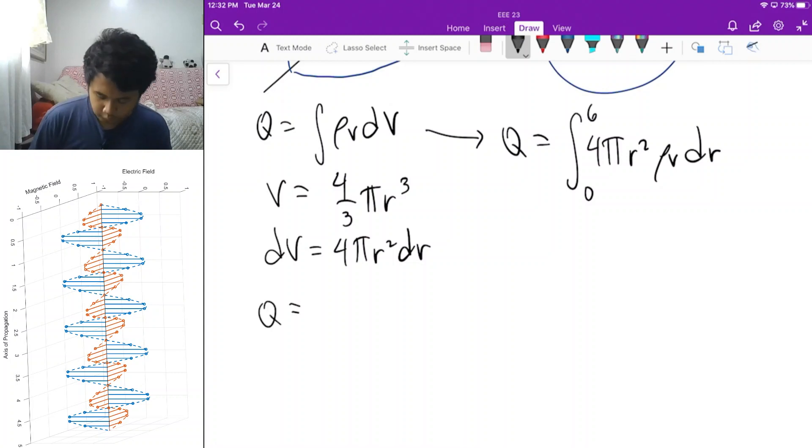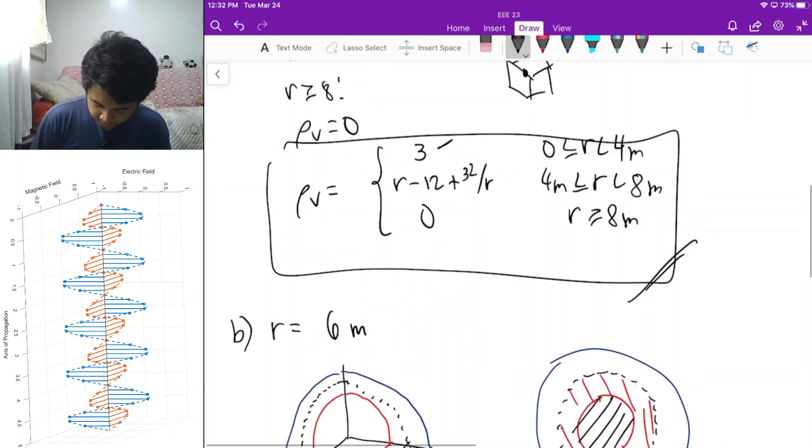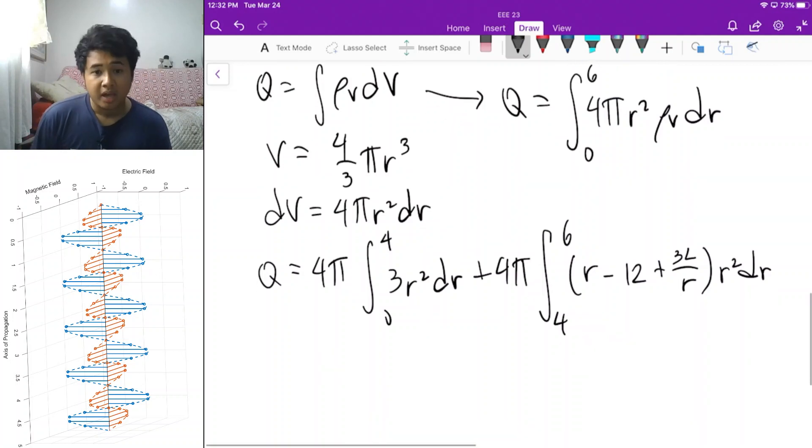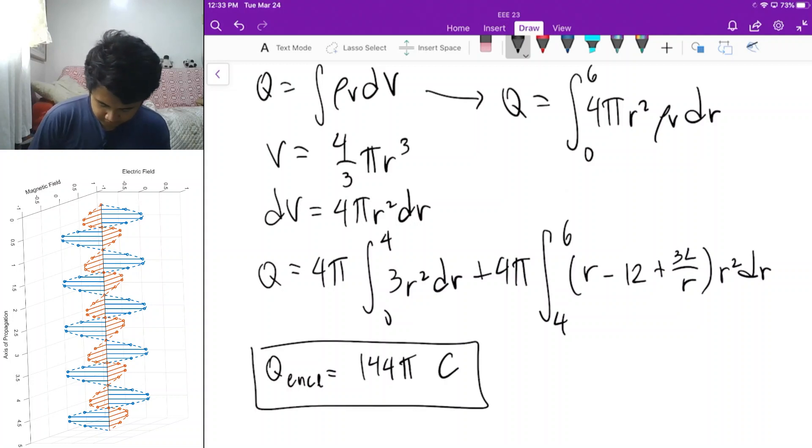We have two regions for rho v here. The first region is you integrate from 0 to 4 of rho v is equal to 3. So 3 times r squared dr plus 4 pi times the integral from 4 to 6 of the second region r minus 12 plus 32 over r times r squared dr. You can now use your calculator to solve for the integral. The enclosed charge is equal to 144 pi coulombs. This is your answer.